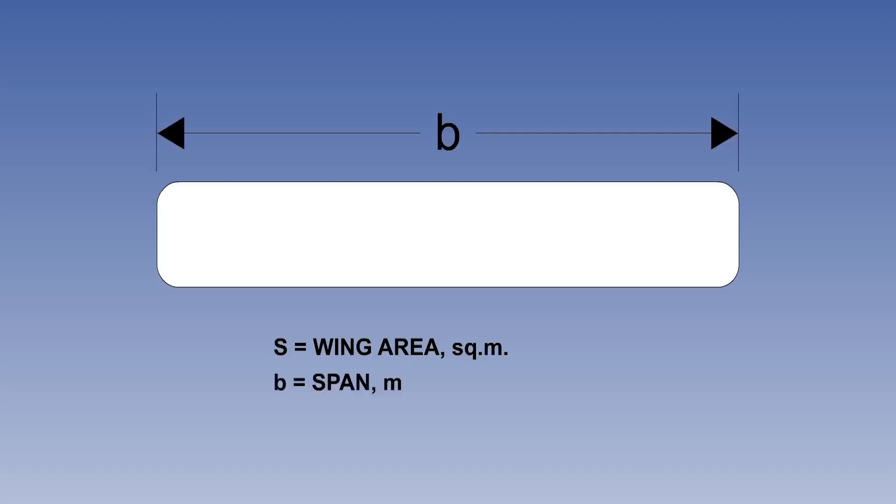The wing span, lowercase b, is the distance from wingtip to wingtip, usually now quoted in metres. The cord is the distance from leading edge to trailing edge, and the average cord, lowercase c, is the geometric average. The product of the span and average cord is the wing area.